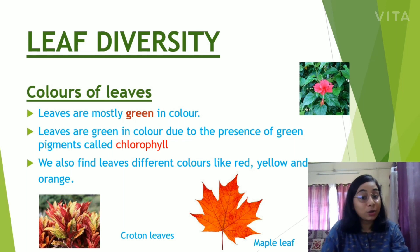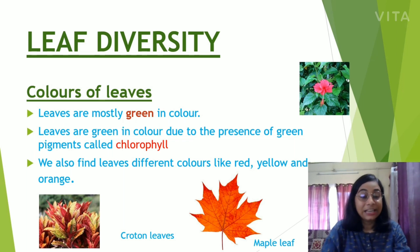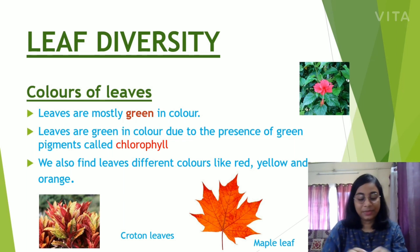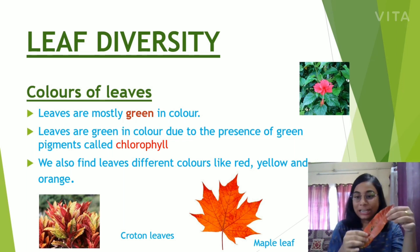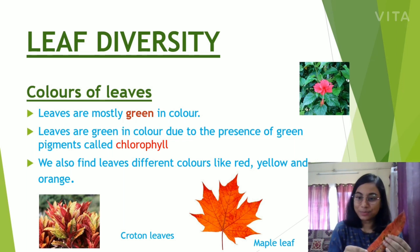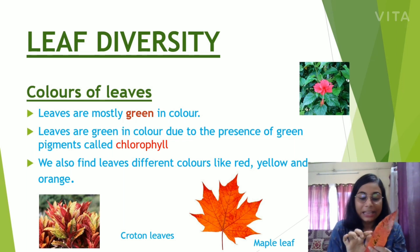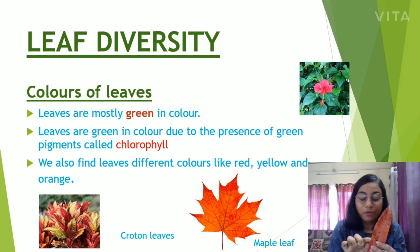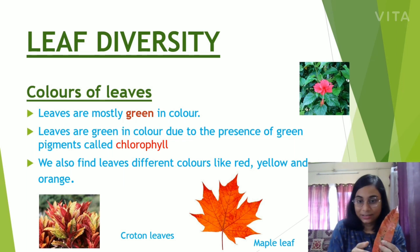But we also find leaves of different colors, like red, yellow, and orange. Croton leaves and maple leaves are mostly reddish-orange in color. I have a croton leaf with me — it is red in color. In this leaf, the green pigment chlorophyll is hidden behind the red pigments.